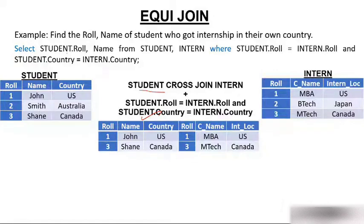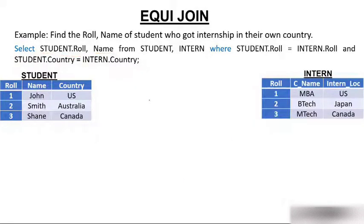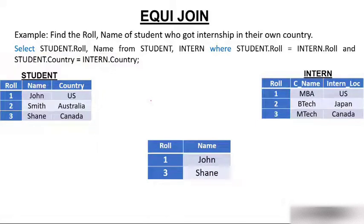We are only interested in role number and name, not all columns. So the final answer contains just those two columns for John and Shane.